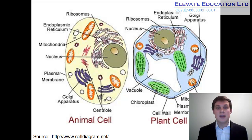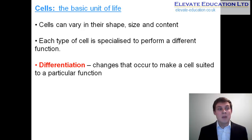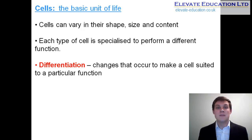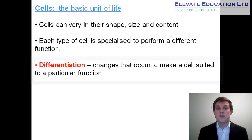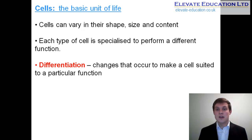Multicellular organisms don't just contain one type of cell — they contain many types of cells. Each type of cell is different, not only in overall shape and size but also in terms of which organelles they contain and the extent to which they contain those organelles. Each type of cell found in a multicellular organism is specialized to perform a different function. When we talk about specialized cells we often use the term differentiation, which refers to the changes that occur to make a cell suited to a particular function.